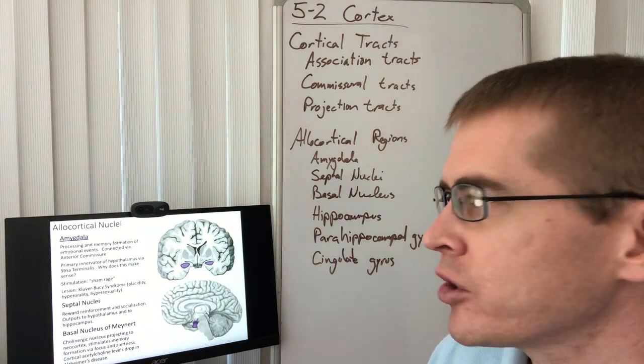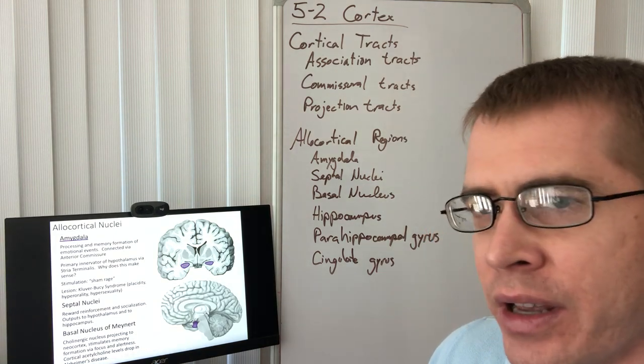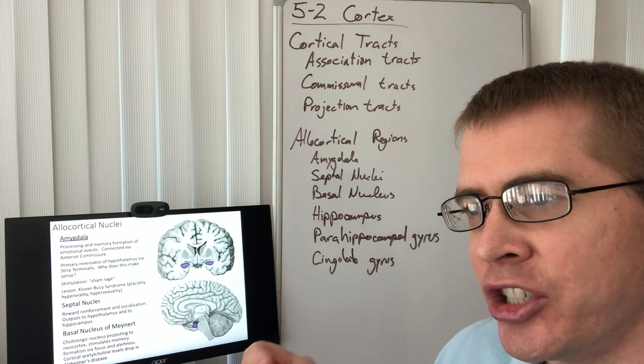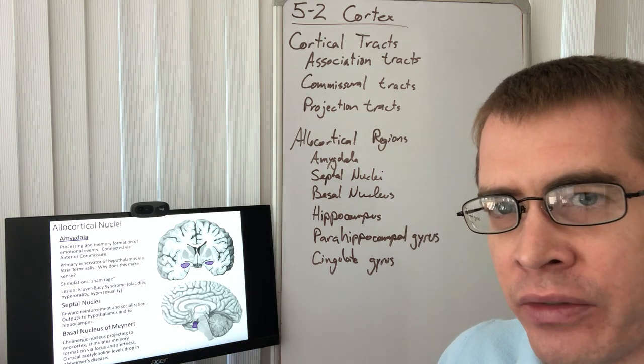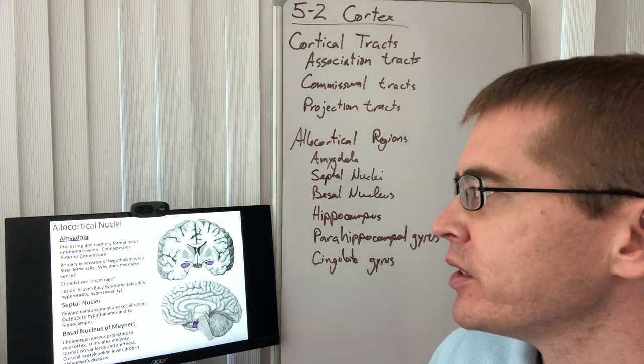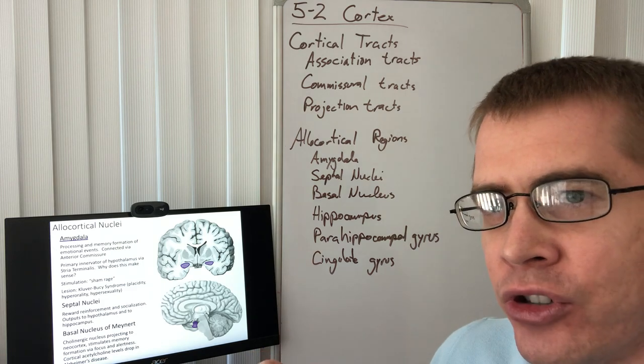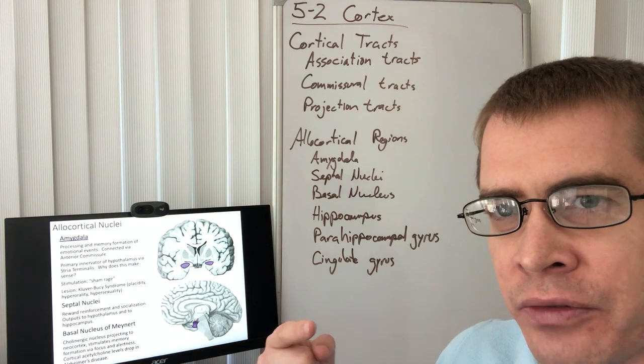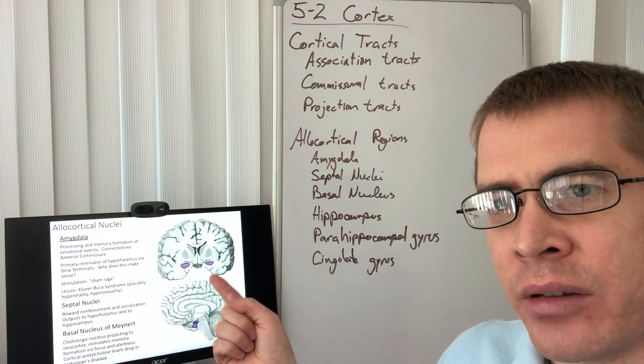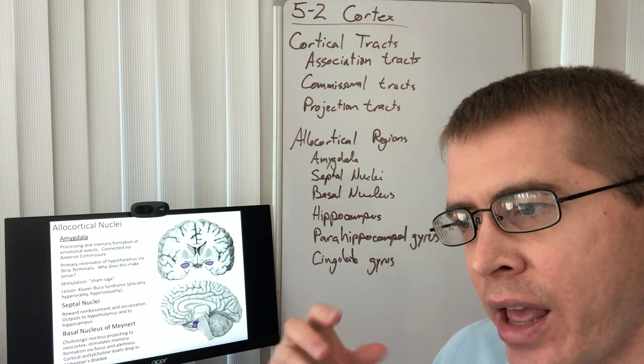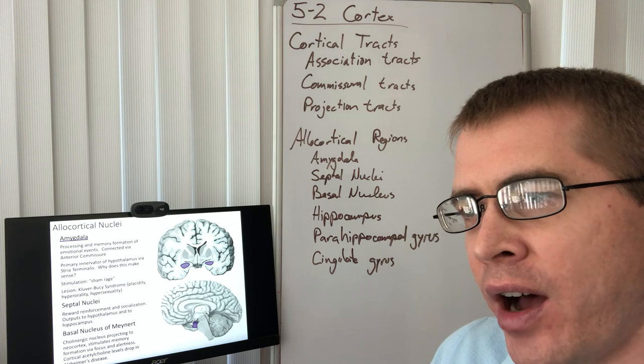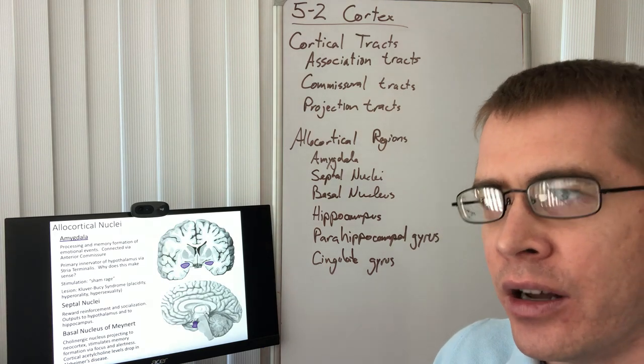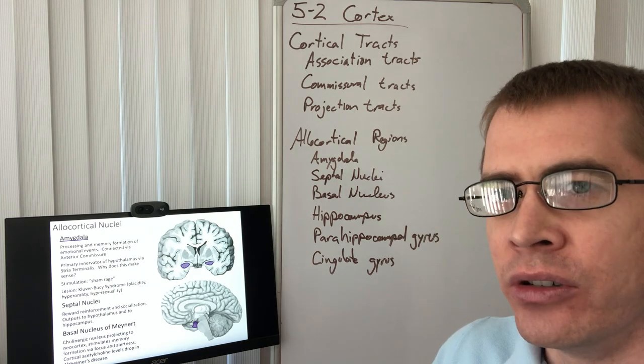And so these bilateral structures process emotional events and process the consolidation in memory of emotional events. So, for instance, something frightening happens to you. A saber-toothed tiger actually jumps out at you. That is a very emotional event. And the amygdalas, the amygdalae, will relay that information and stimulate those neurons that are firing during that event so that you can recall that event later and understand the magnitude of that event.